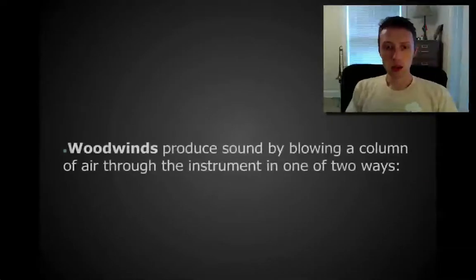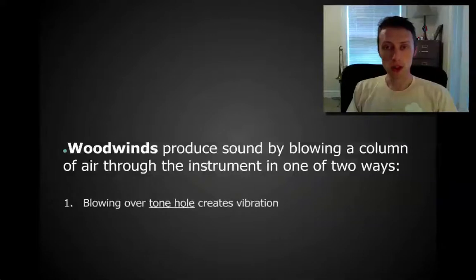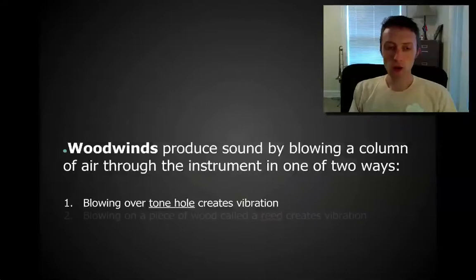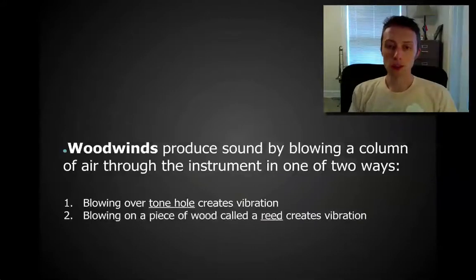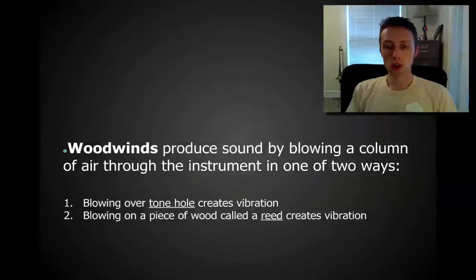So how is sound produced on a woodwind instrument? By blowing on a column of air through the instrument in one of two ways. You can either blow over a tone hole that creates a vibration, or you can blow on a piece of wood called a reed, and that reed vibrates — that's where the vibration comes from. So you produce the sound by blowing a column of air through an instrument via a tone hole or through a reed.